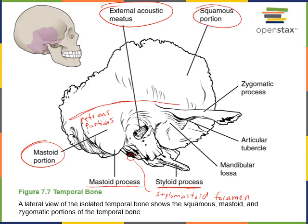The squamous portion of the temporal bone is found more superiorly and forms part of the inferior lateral wall of the cranium. We can also see another process that extends out — the zygomatic process — which joins with the zygomatic bone. The zygomatic process of the temporal bone and the zygomatic bone together form the zygomatic arch of the buccal region.